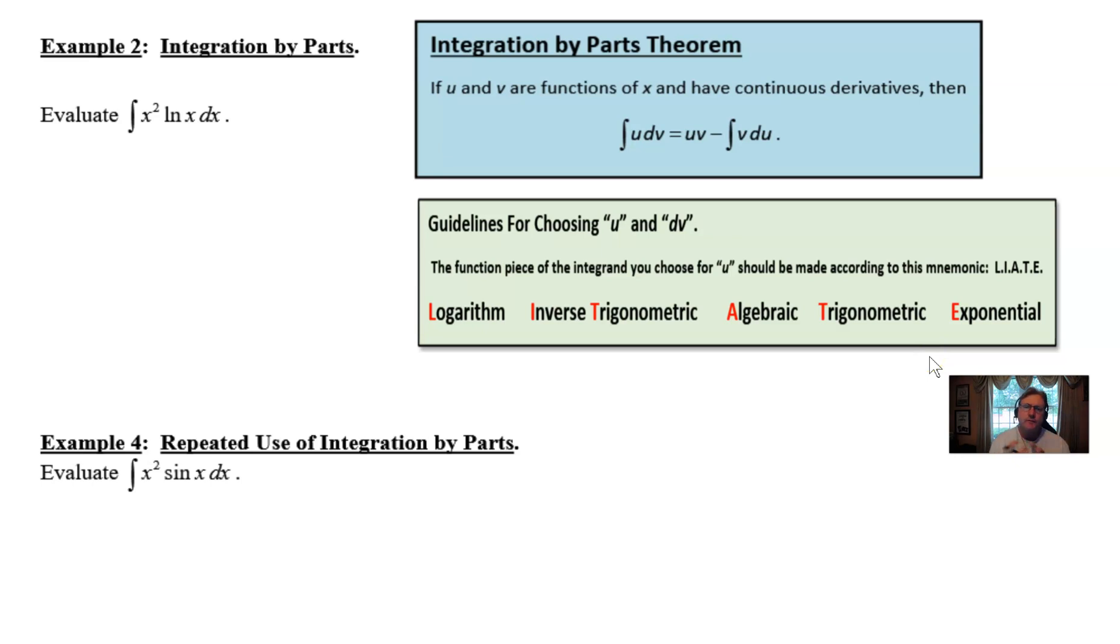If you recall from our first video, we outlined what the integration by parts formula looks like. The integration of u with respect to v equals uv minus the integral of vdu. At our school we affectionately call that dove at times, and we also talked about this mnemonic LIATE for which you can use to choose what you're going to let u and dv equal.